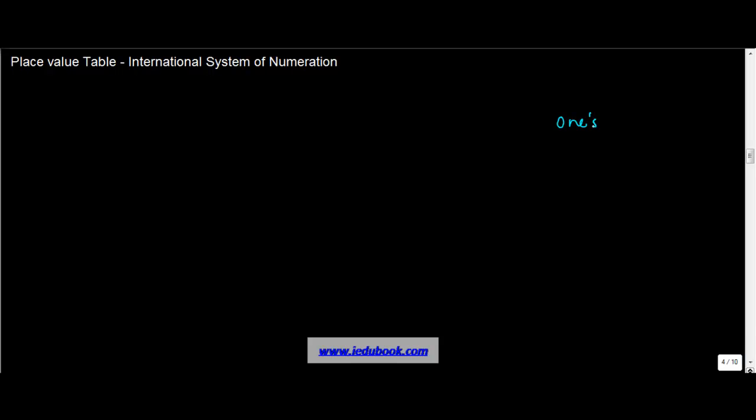Let us now see how a place value table looks in the case of the international system of numeration. The place value table in the international system has ones, just like we saw in the earlier videos in the Hindu-Arabic system.